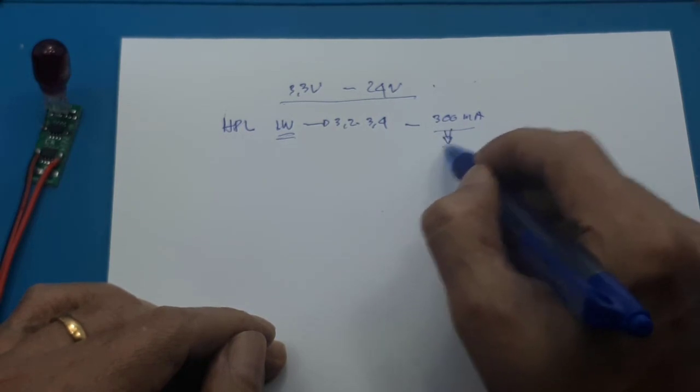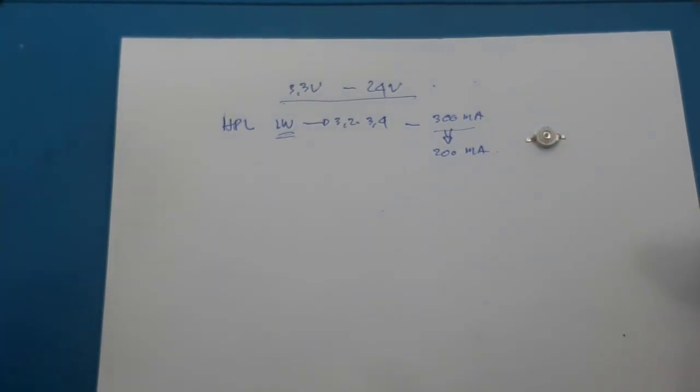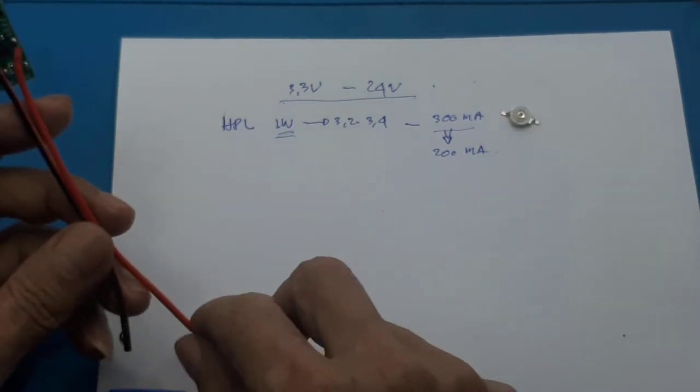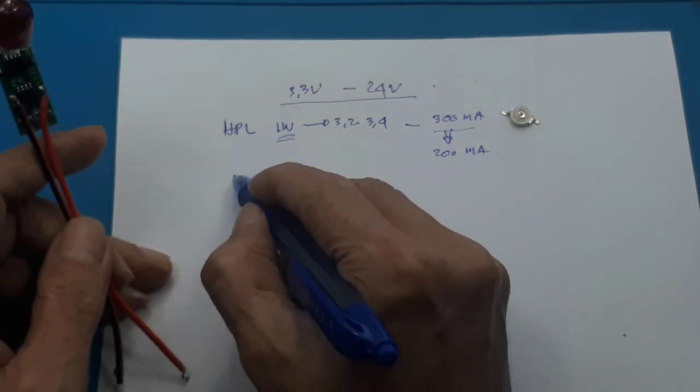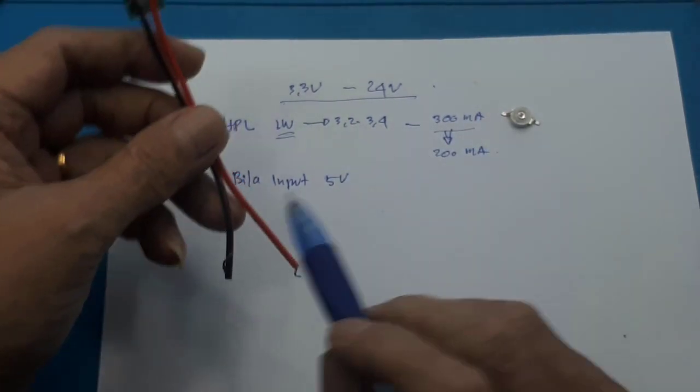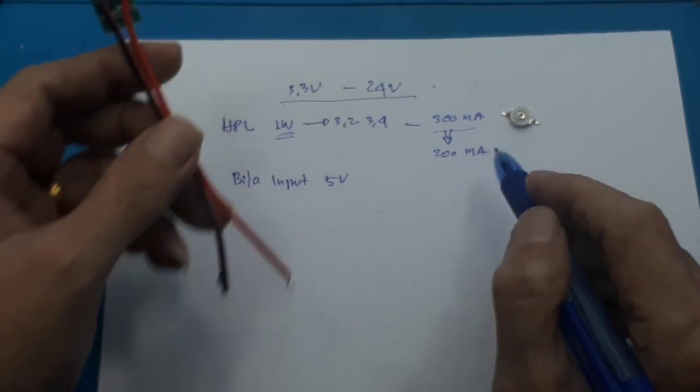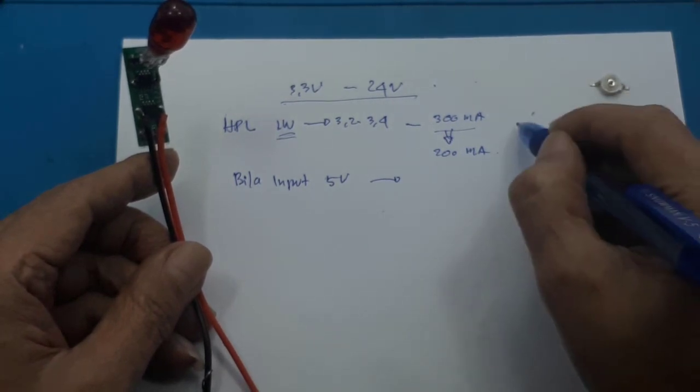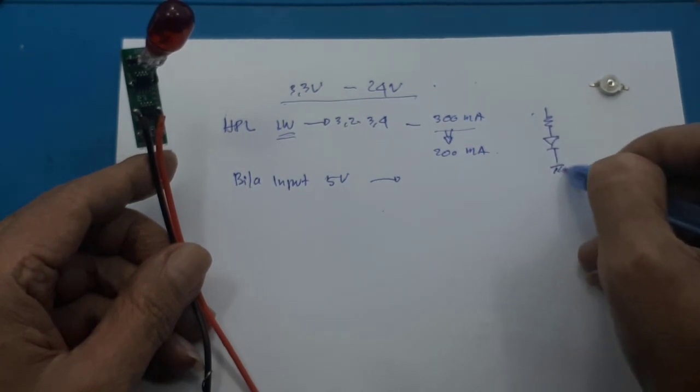Jadi yang kalian perhatikan tegangan kemudian arusnya, anggap saja 300 mA. Umumnya biasanya saya menggunakan HPL ini tidak maksimum, jadi saya set agar aman di 200 mA. Kemudian untuk menyalakan ini kalian ingin menggunakan tegangan berapa? Bila kalian ingin menggunakan tegangan 5 volt, jadi saya contohkan 5 volt saja. Jadi bila input 5 volt, untuk 12 volt yang berubah hanya resistor-nya saja. Kita tambah pembatas arus resistor. Maka besar R, jadi pemasangannya kita tambah seperti ini saja.